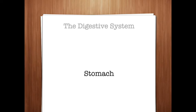A peptic ulcer is a lesion of the mucous membranes of the digestive system — 'pept' means digestion and '-ic' means pertaining to. These ulcers, frequently caused by the bacterium Helicobacter pylori, may occur in the lower end of the esophagus, the stomach, or in the duodenum. Gastric ulcers are peptic ulcers that occur in the stomach. Duodenal ulcers are peptic ulcers that occur in the upper part of the small intestine and are the most common form of peptic ulcer.